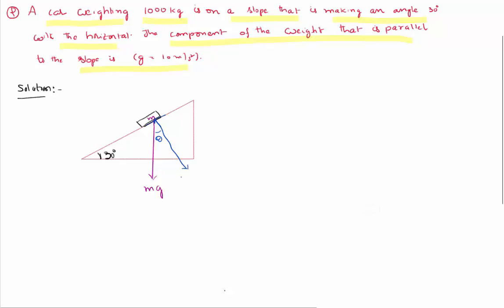Therefore I can resolve this mg into components. This is what is called resolution of vectors — we are dissolving the vector into components. Being this angle theta, this angle is also equal to theta. The adjacent component of mg is mg cos theta, and I can further resolve the other component of mg, which is equal to mg sin theta.